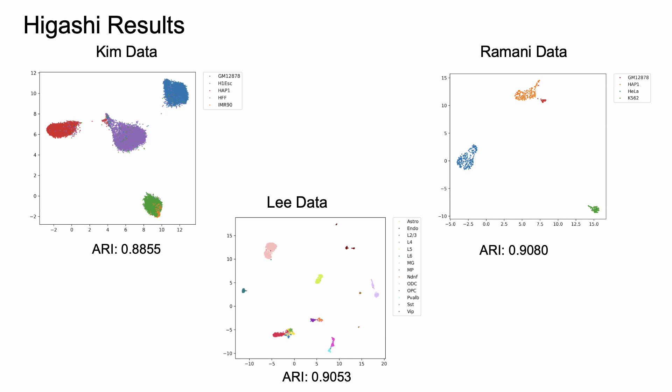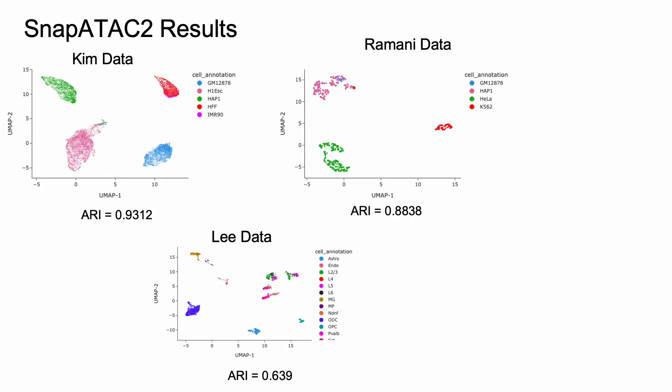To briefly talk about the results achieved by several methods: Hi-Gashi is the state-of-the-art, as discussed before, and you can see that it performs very well with clear separation on almost all datasets, achieving nearly around 90% ARI. ARI is a metric from 0 to 1. Similarly, Snap-ATAC is a very recent method — currently in preprint — and it is also performing quite well. Only the Lee data has slightly lower ARI compared to Hi-Gashi, but they are competitive when it comes to the Kim and Ramani data.